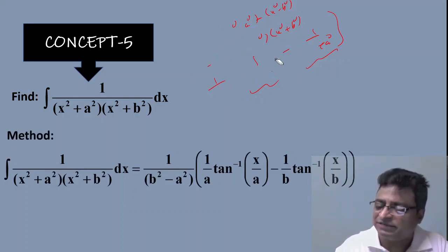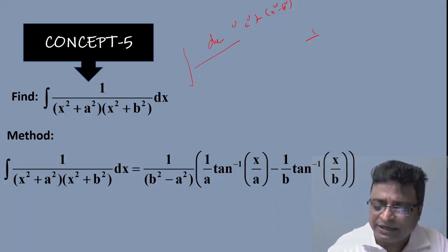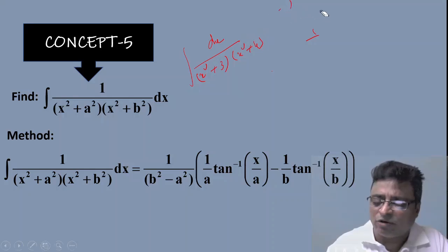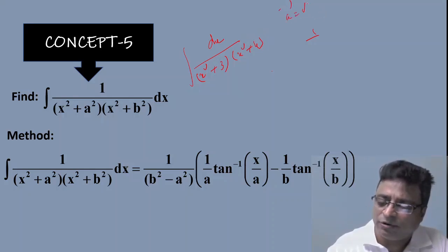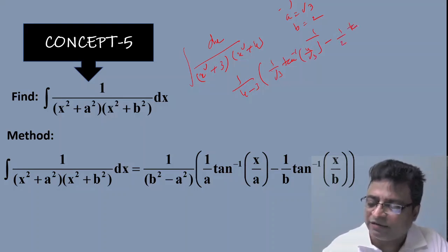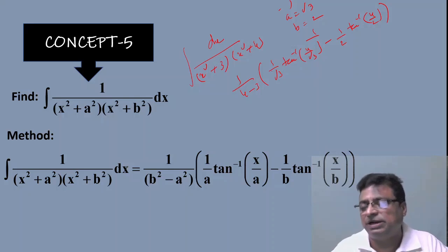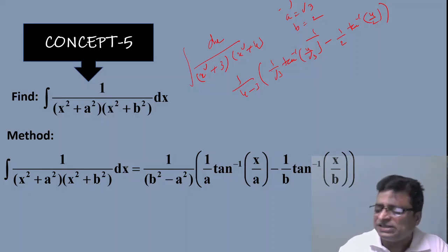For example, ∫ dx / [(x² + 3)(x² + 4)]: here a² = 3 so a = √3, and b² = 4 so b = 2. The answer is (1/(b² − a²)) · [(1/a) tan⁻¹(x/a) − (1/b) tan⁻¹(x/b)] = (1/(4 − 3)) · [(1/√3) tan⁻¹(x/√3) − (1/2) tan⁻¹(x/2)]. You can write the answer directly using this formula, handling any sign carefully. These are the most powerful tips for rational integration.